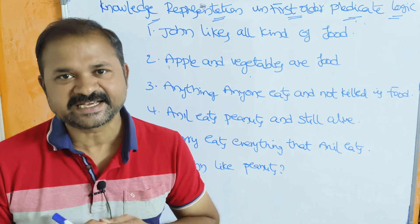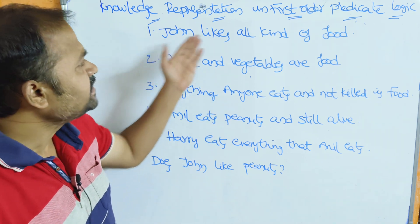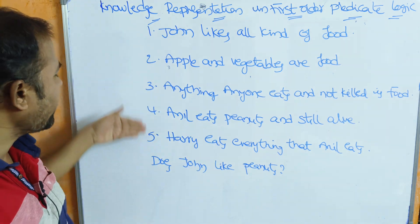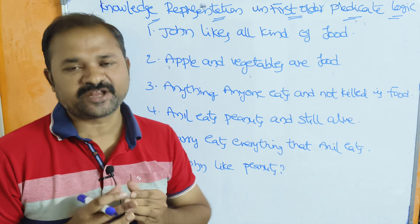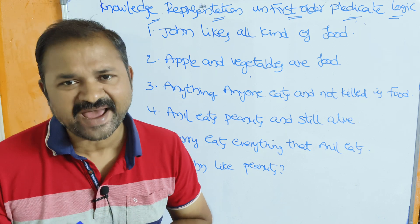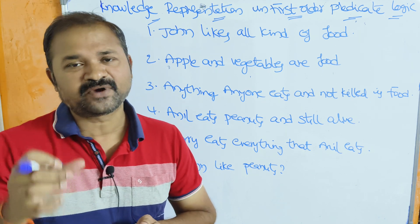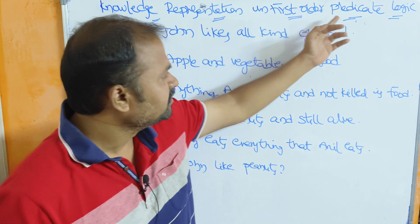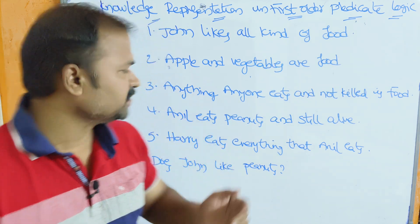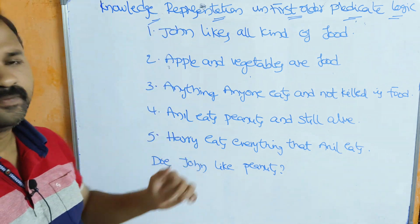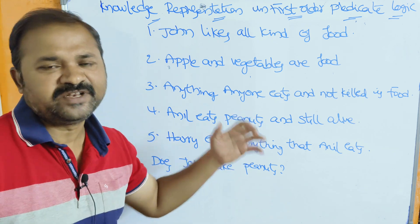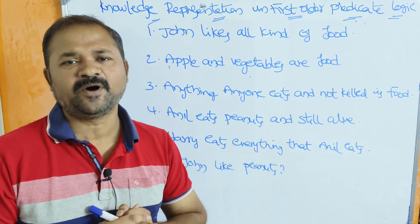Now let us discuss knowledge representation in first-order predicate logic. Some facts or statements are given, and we have to represent all these statements with the help of well-formed formulas in first-order predicate logic. In the next video, we will solve this problem. Here we have a problem: does John like peanuts? We will solve this problem with the help of resolution.